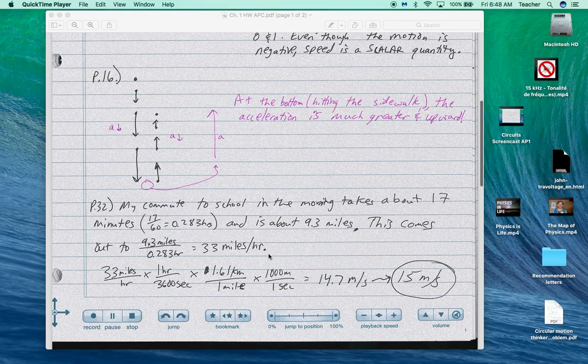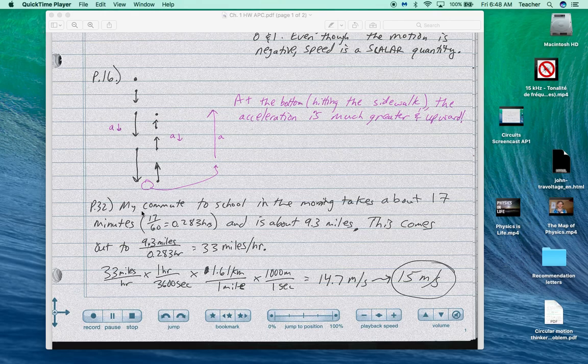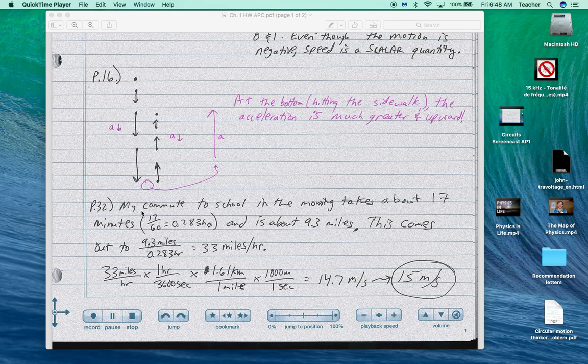Here, this should be different for each person. My commute to school is about 17 minutes. Yeah, I've timed it because anytime I get below 17 minutes, I'm happy. More than 17 minutes, not so happy. It's about 17 minutes. It's about 9.3 miles according to the car odometer. That comes out to 33 miles an hour.